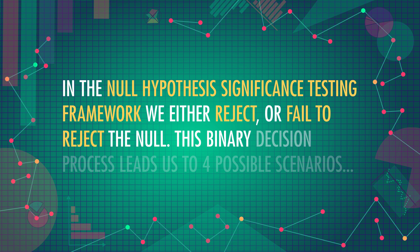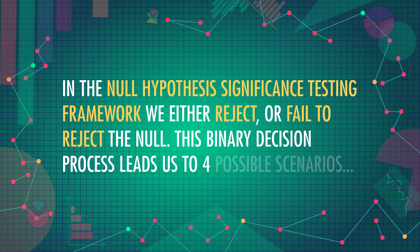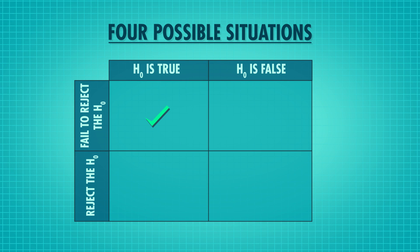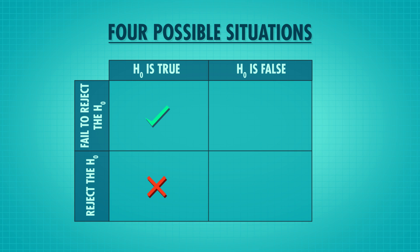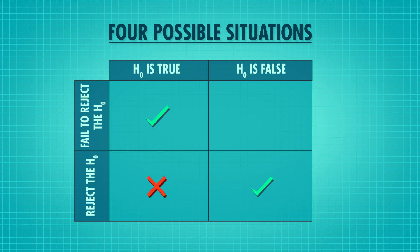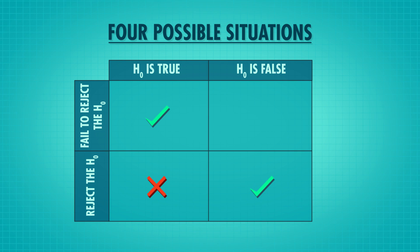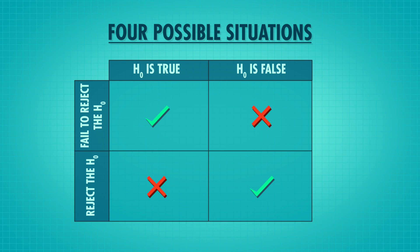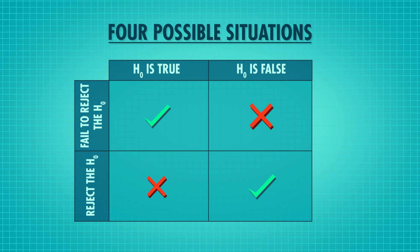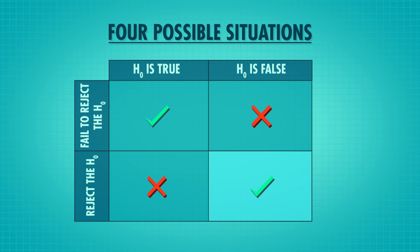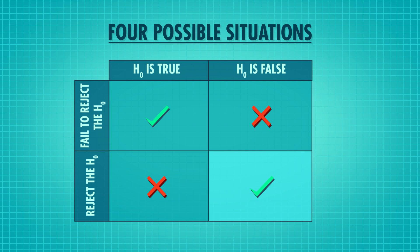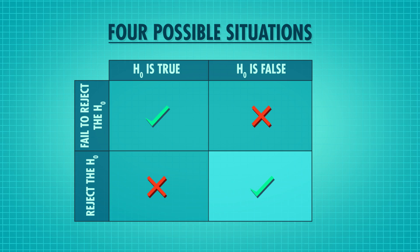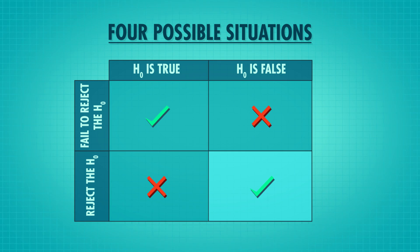This binary decision process leads us to four possible scenarios. The null is true and we correctly fail to reject it. The null is true, but we incorrectly reject it. The null is false and we correctly reject it. Or the null is false and we incorrectly fail to reject it.